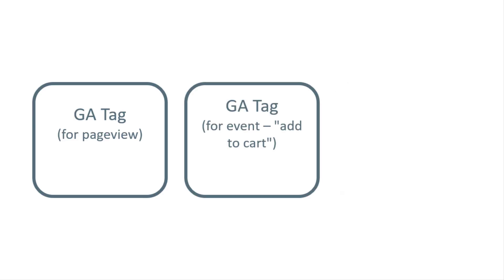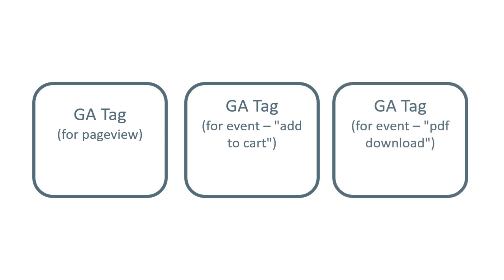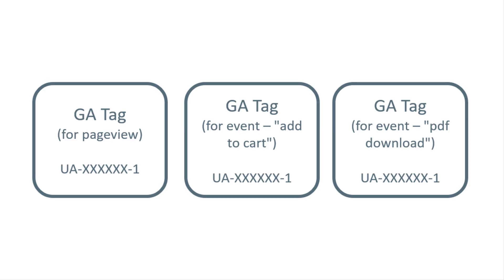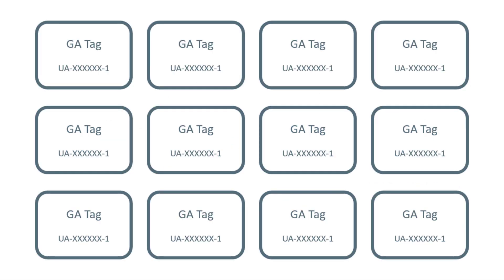Let me show you something. Imagine a container with three tags: one for page view, one for add to cart, and one for PDF downloads — all sending data to the same Google Analytics property. The tracking ID is the same on all three tags. The problem grows if you have multiple Google Analytics tags and all of them have settings configured individually at the tag level.